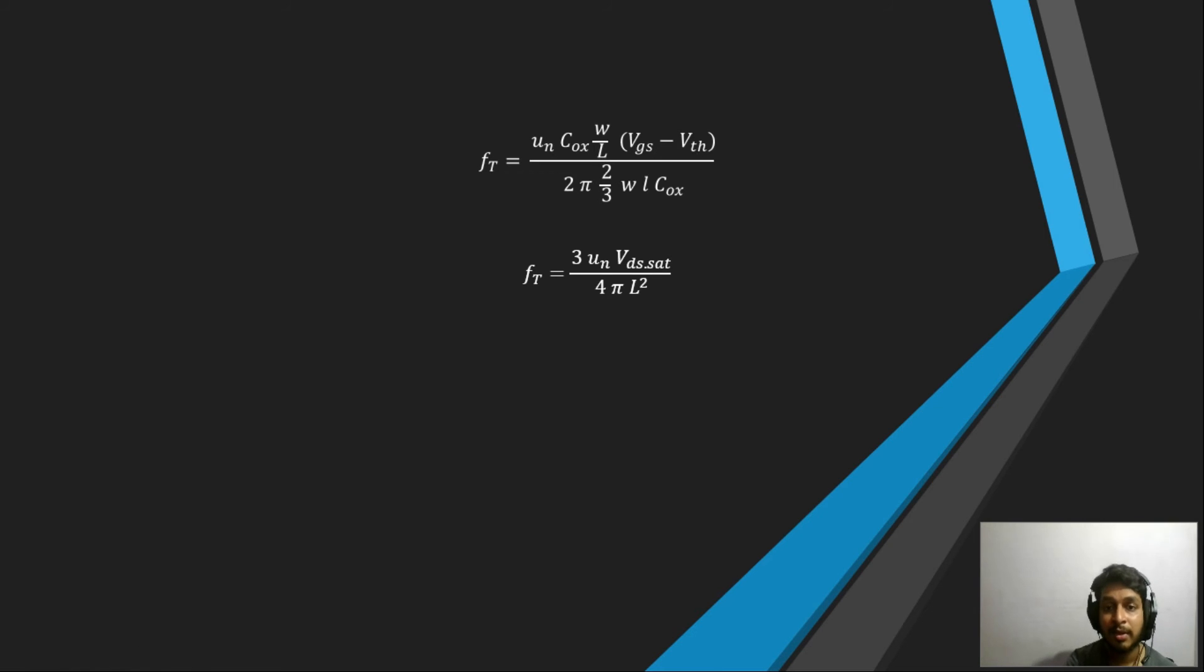And now we will replace this VGS minus VTH by VDSsat, saturation. We know that VGS minus VTH can be equal to VDSsat. So in that case, our fT, the transition frequency, becomes equal to 3 times mu N VDSsat divided by 4 pi L squared. And now this equation is fundamentally very important, because I can see that the transition frequency—that after the frequency which is critical frequency, after which our transistor is going to attenuate—that frequency is dependent on both the L, which is the channel length of the transistor, and also VDSsat.